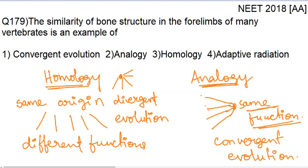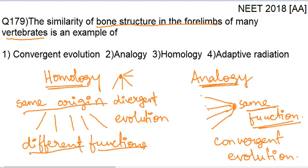Now the question reads: the similarity of the bone structure in the forelimbs of many vertebrates. The structure of the bone is similar — why? Because they are coming from the same origin, from the same ancestral species. But the functions they are performing today are different. That is why the correct option is homology.